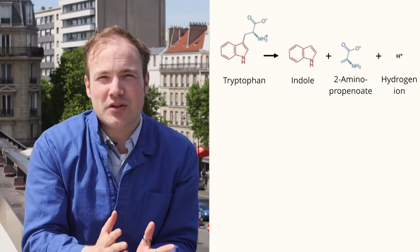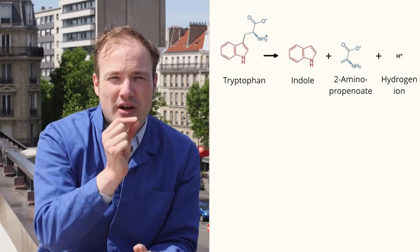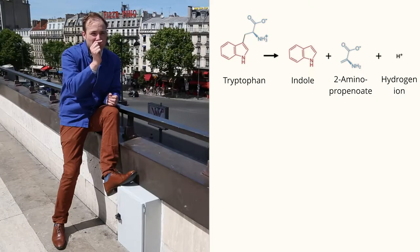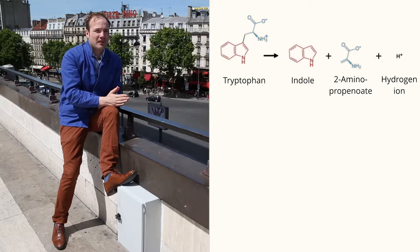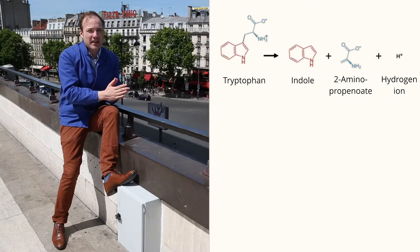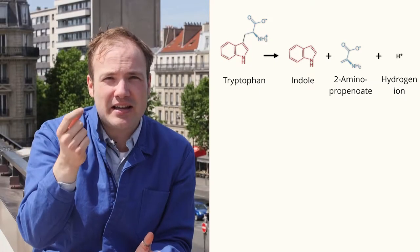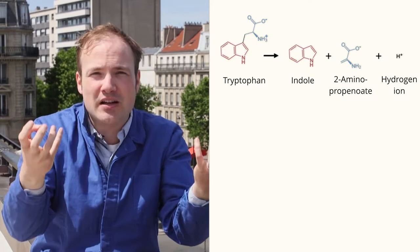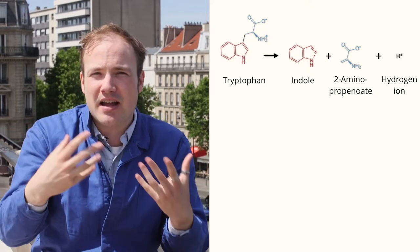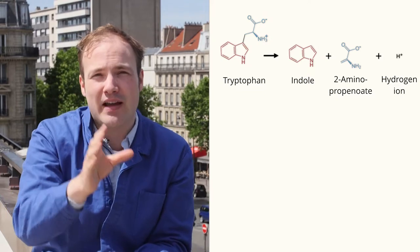The enzyme takes a single substrate, tryptophan, and produces three products: indole, 2-aminopropenoate, and a hydrogen atom. We draw the chemical reaction arrow in only one direction to indicate that the reaction is irreversible. Once the tryptophan is split up, the enzyme can't reassemble it because that would require an input of energy.